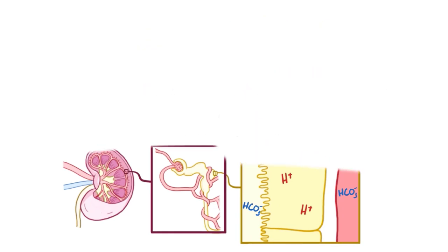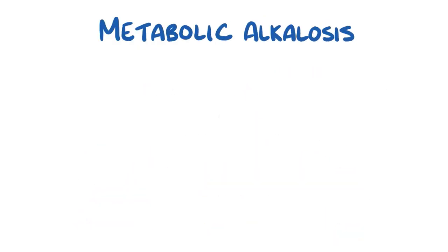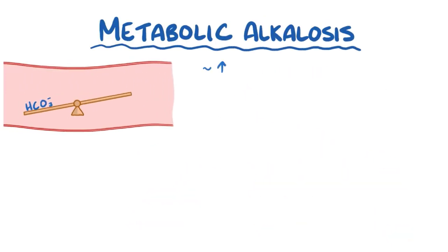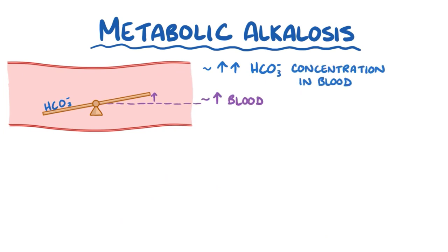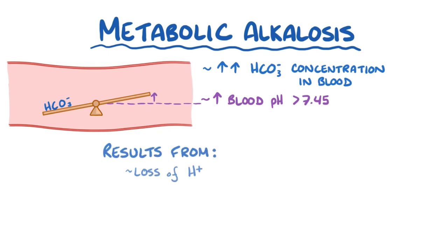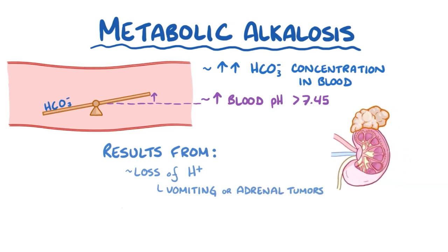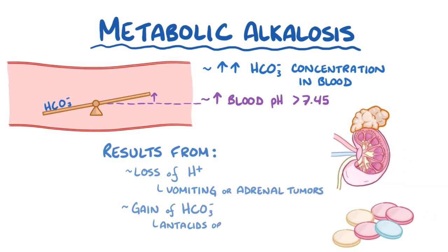As a quick recap, metabolic alkalosis is caused by an increased bicarbonate ion concentration in the blood that elevates blood pH above 7.45. This most frequently results from loss of hydrogen ions due to vomiting or adrenal tumors, and less commonly from a gain of bicarbonate ions from antacids or volume contraction.